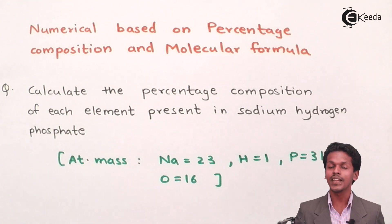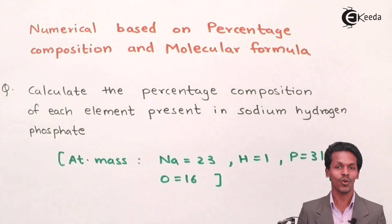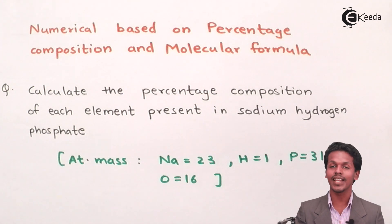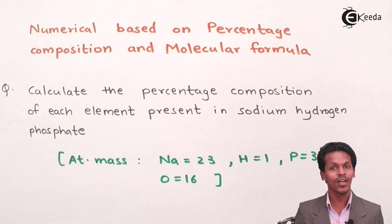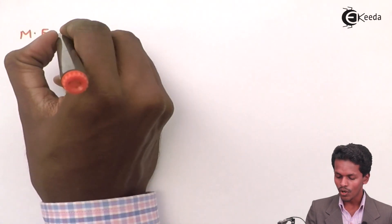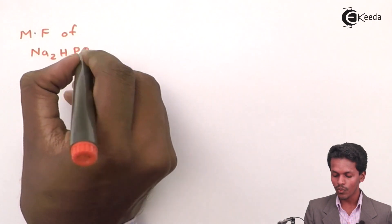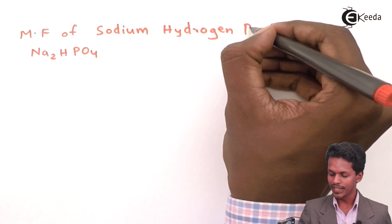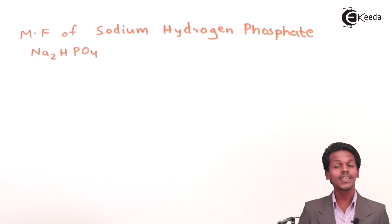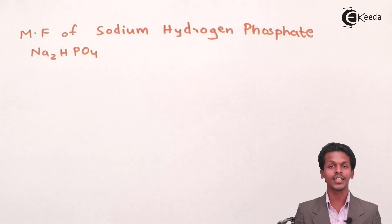Oxygen is 16 gram per mole. To calculate percentage composition we first need the molecular formula. The molecular formula of sodium hydrogen phosphate is Na₂HPO₄. Once we have the molecular formula, the first step is to calculate the molar mass of this compound.